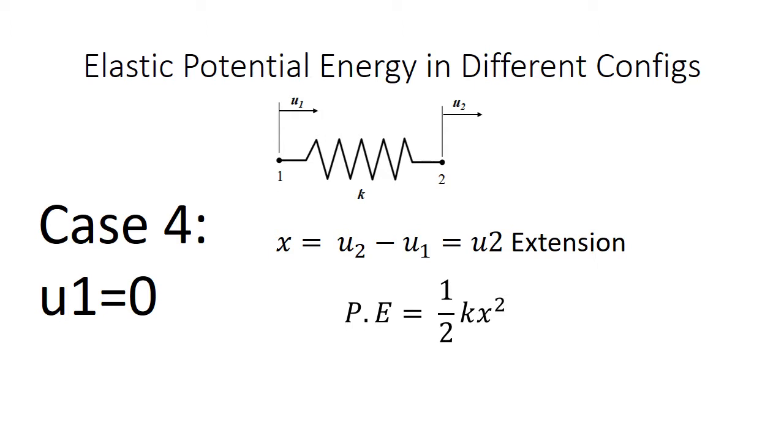Case 4, if U1 is zero. Then there is an extension of the spring and elastic potential energy is given by half times K times U2 squared.